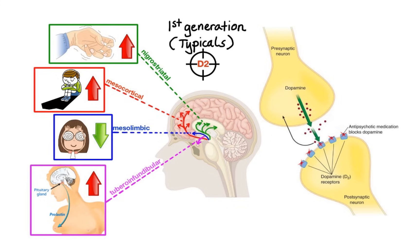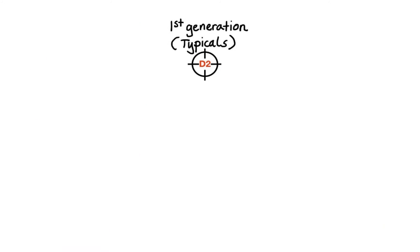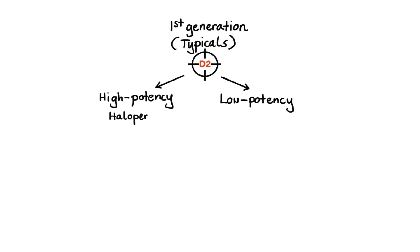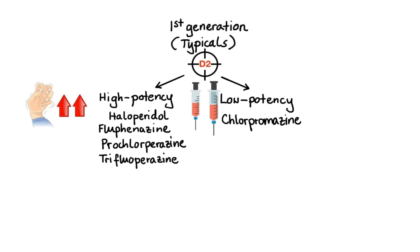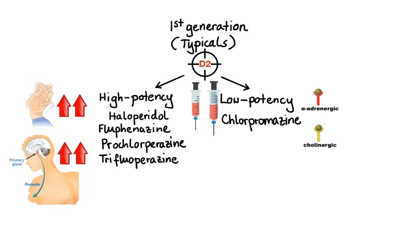Based on their affinity for D2 receptors, typical antipsychotics are often subclassified as high-potency or low-potency. Examples of high-potency antipsychotics are haloperidol, fluphenazine, prochlorperazine, and trifluoperazine. The example of a low-potency antipsychotic is chlorpromazine. Generally speaking, high-potency agents produce a stronger antipsychotic effect at relatively low doses. However, they also tend to cause more extrapyramidal side effects and a greater increase in prolactin levels. The less selective low-potency agents do not bind to D2 receptors as tightly and generally affect a range of other receptors including alpha-adrenergic, cholinergic, and histamine receptors, which can result in a variety of side effects.